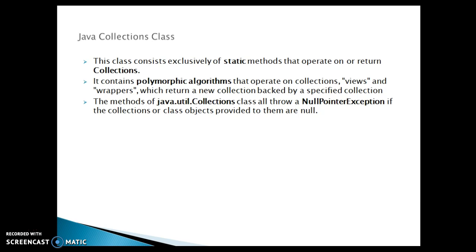The methods of java.util.Collections class all throw NullPointerException if the collections or class objects provided to them are null. There are a lot of static methods in this class — if you pass a parameter as null, it is going to throw a NullPointerException. Most of the methods are static, so you can understand this as a utility class with utility methods.